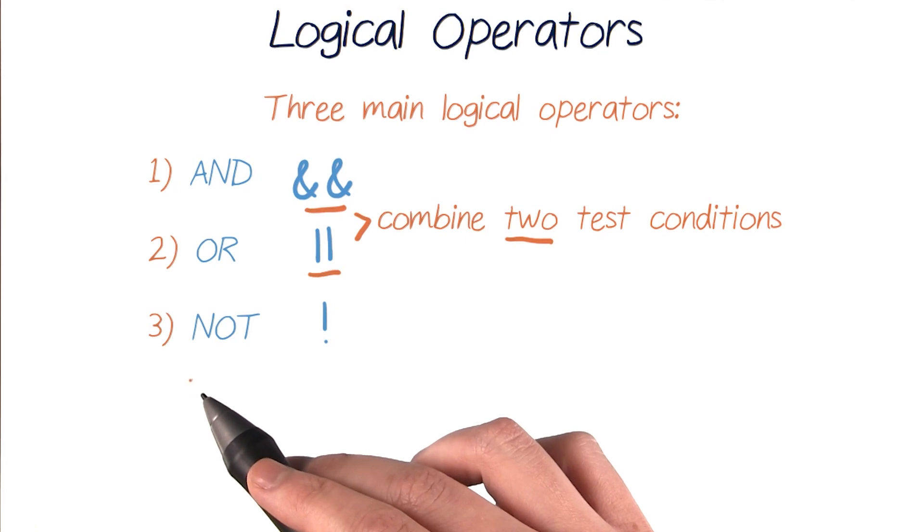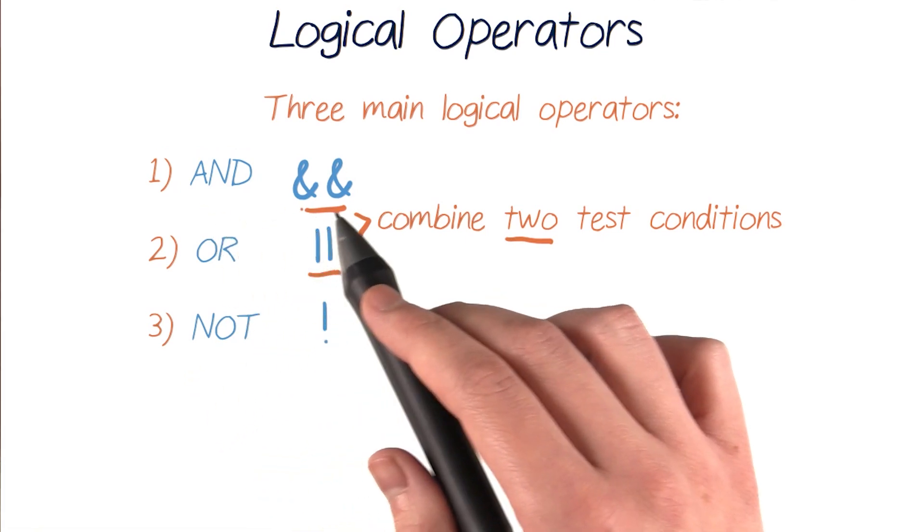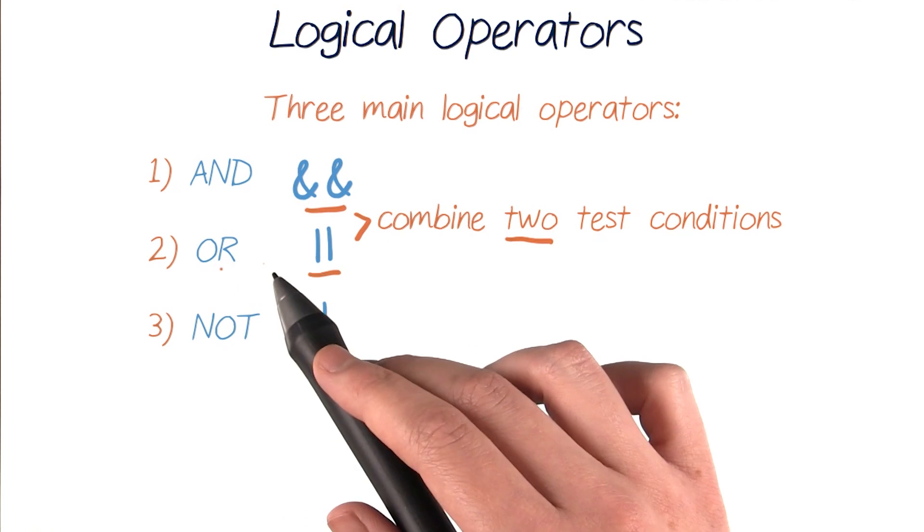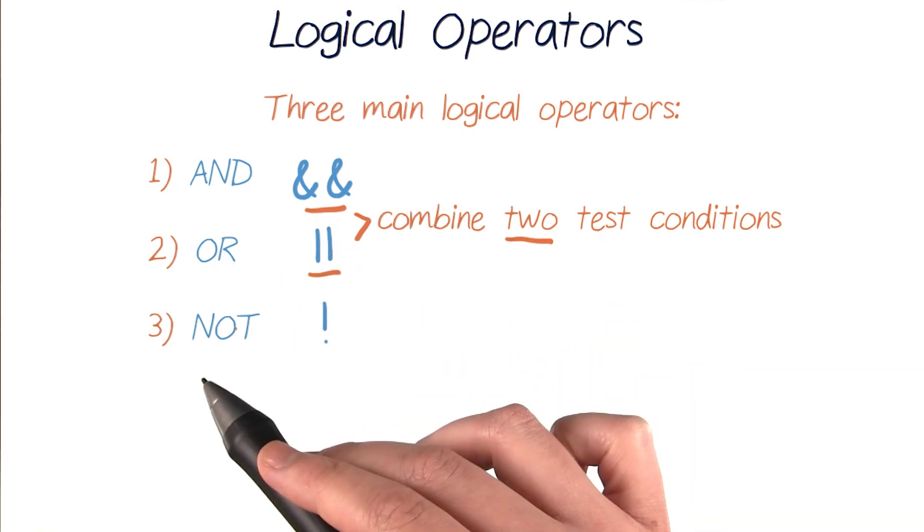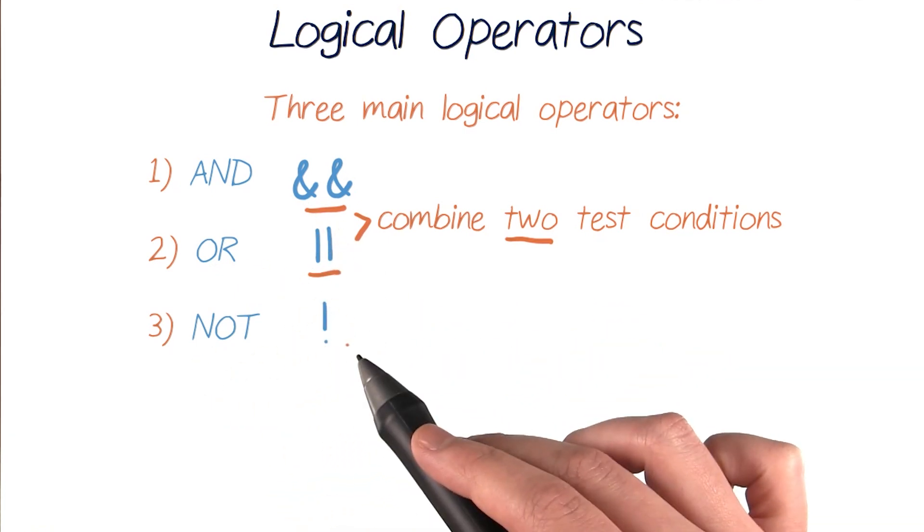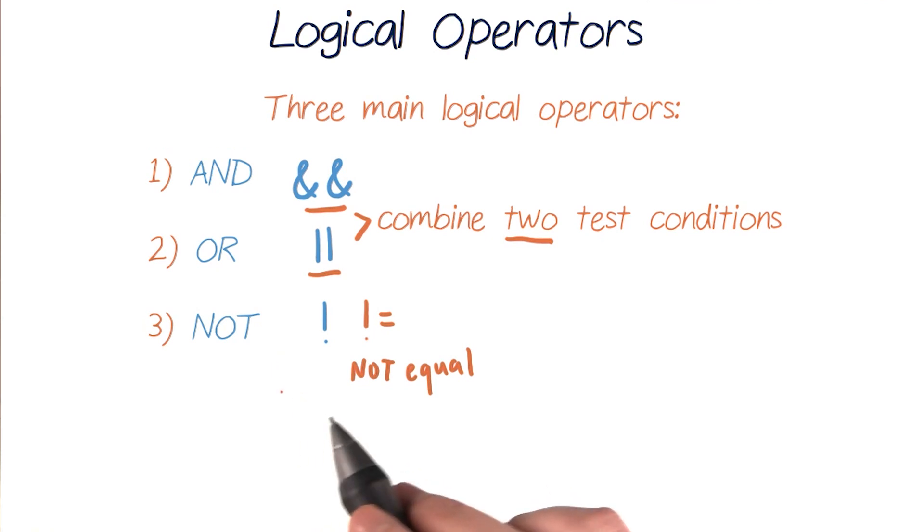There are three main logical operators: AND, which is these two ampersand symbols, OR, which is these two straight lines, and NOT, an exclamation point, which may look familiar from how we checked if some value was not equal to something else.